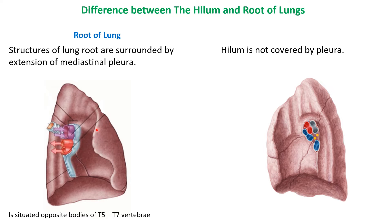Now, where exactly is the root of lung located? It is situated opposite to the bodies of T5 to T7 vertebrae.